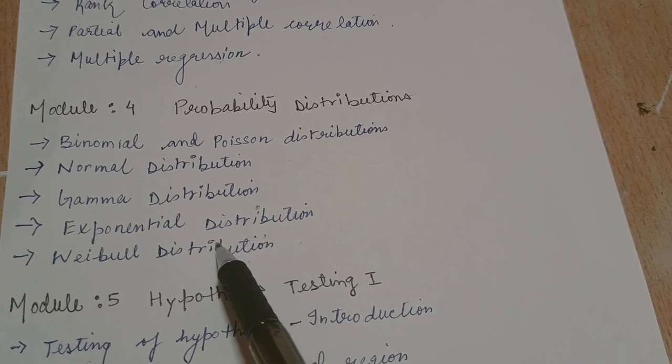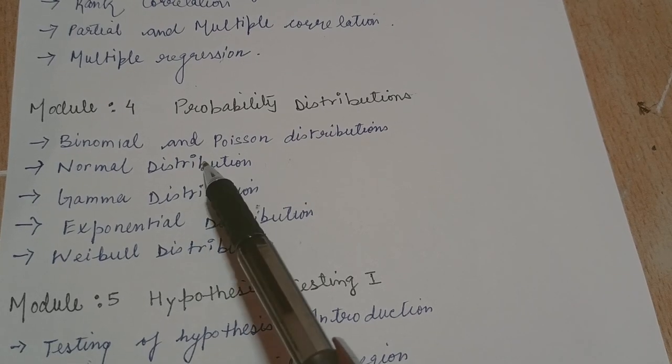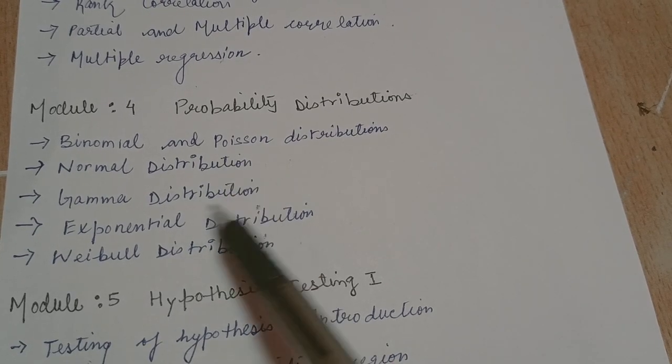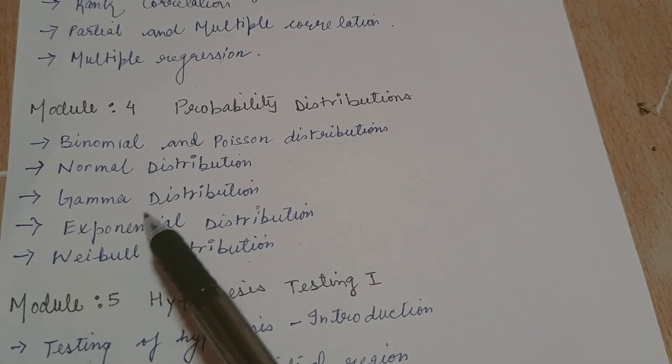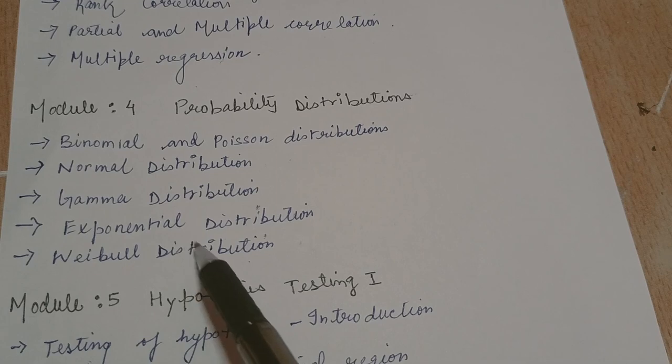Usually teachers give questions from the first two topics. These two topics are really very important. And then the third most important topic here is exponential distribution and sometimes they can give questions from gamma as well.